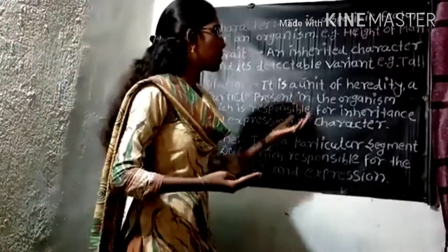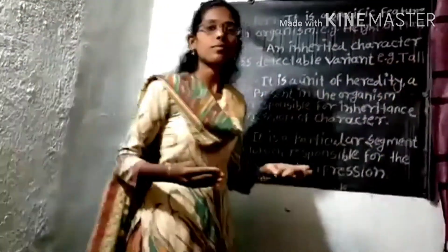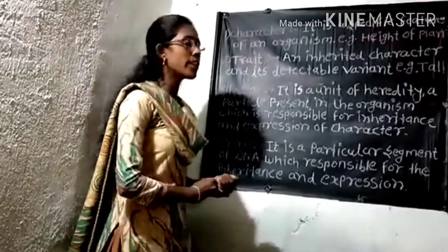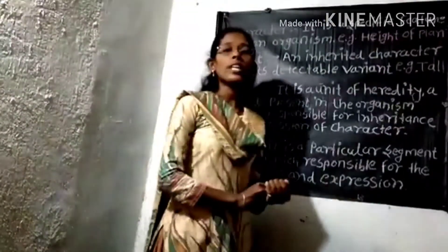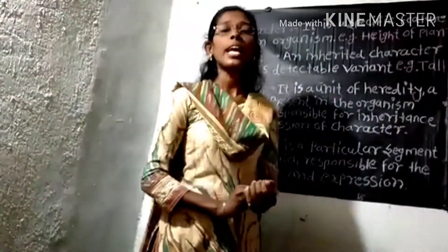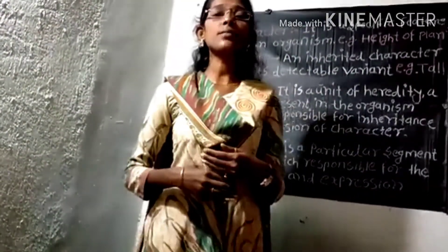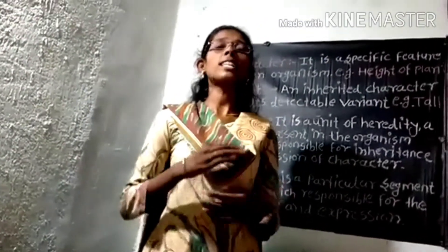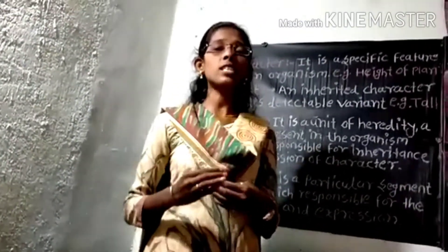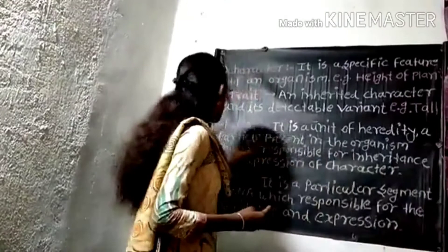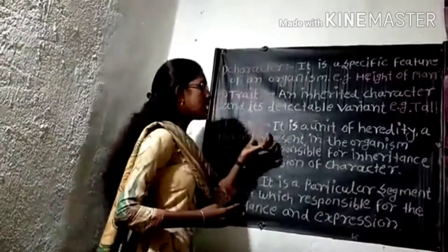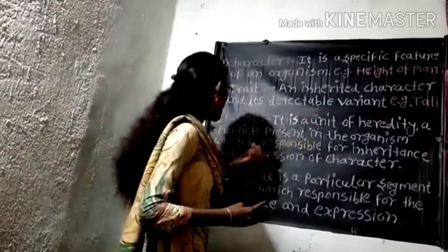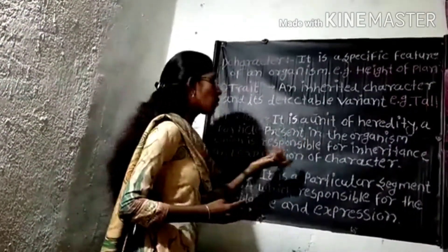The next term is 'factor.' Factor is the unit of heredity. Heredity is the transmission of genetic information from one generation to another generation. A factor is a particle present in the organism which is responsible for the inheritance and expression of a character.